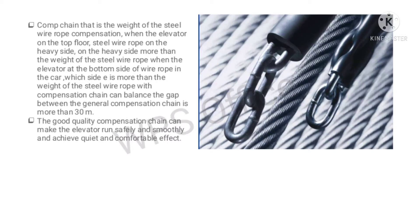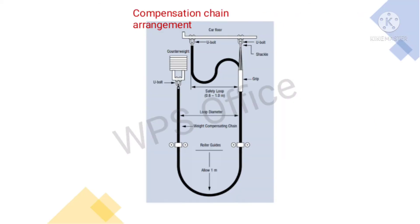The compensation chain balances the weight of the steel wire rope. When the elevator is at the top floor, the wire rope on the heavy side weighs more. When the elevator is at the bottom floor, the wire rope on the car side weighs more. The compensation chain balances this gap. Generally, compensation chains are used when the elevator travel is more than 30 meters.